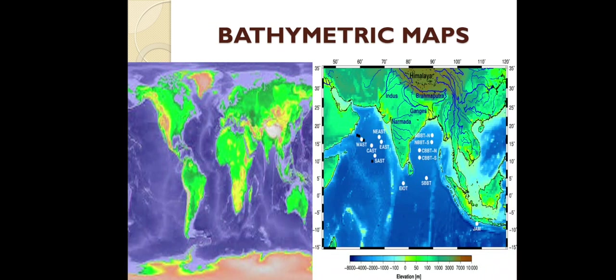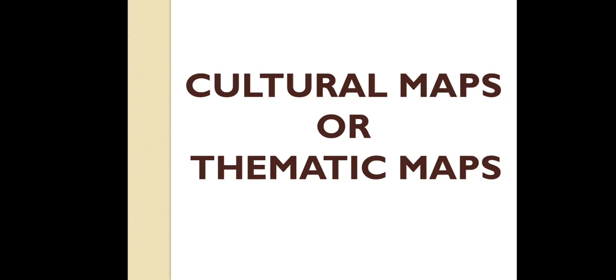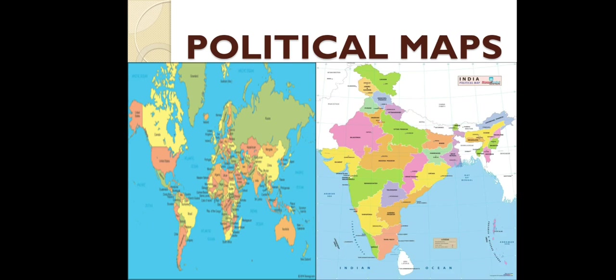The last physical map type is the bathymetric map, which depicts the depth of sea beds and oceans. Now we will have a look at the cultural maps, also called thematic maps. The cultural map shows man-made features or human aspects.